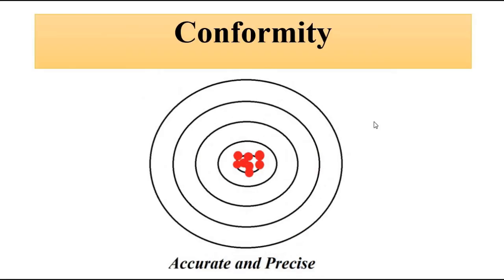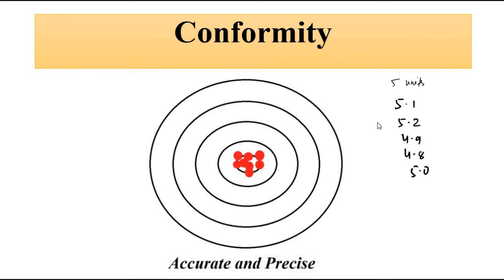If we correlate this with measurement, suppose the true value of a measured parameter is 5 units. A device gives us readings such as 5.1, 5.2, 4.9, 4.8, 5.0. These readings are grouped close to the true value of 5 units and we are able to get close to it on a consistent basis — this corresponds to the accurate and precise case.